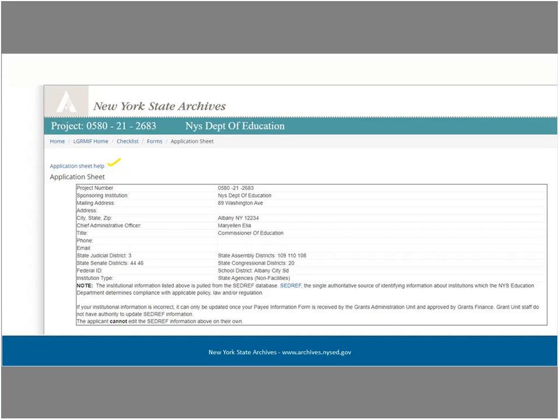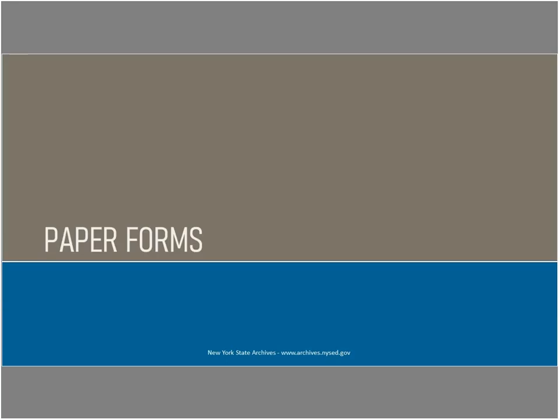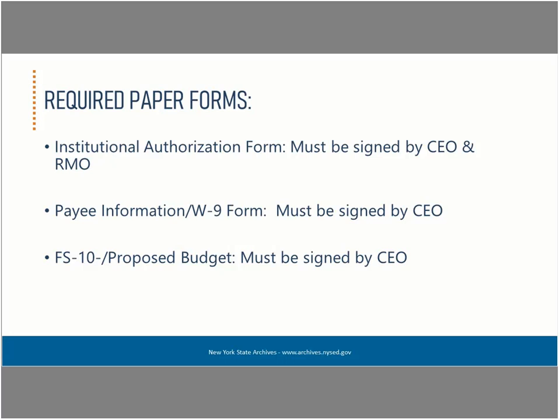In addition to the application sheet, project and budget narratives, there are other forms required to be submitted with your application. In our final segment, we will take a brief look at these forms. All of these forms are accessible within the eGrants system, but not all of them can be completed within eGrants. This brief look will include both the required electronic and paper forms. For a more in-depth look, see Module Number 5 in this series, LGRMIF Application Forms and Tips.